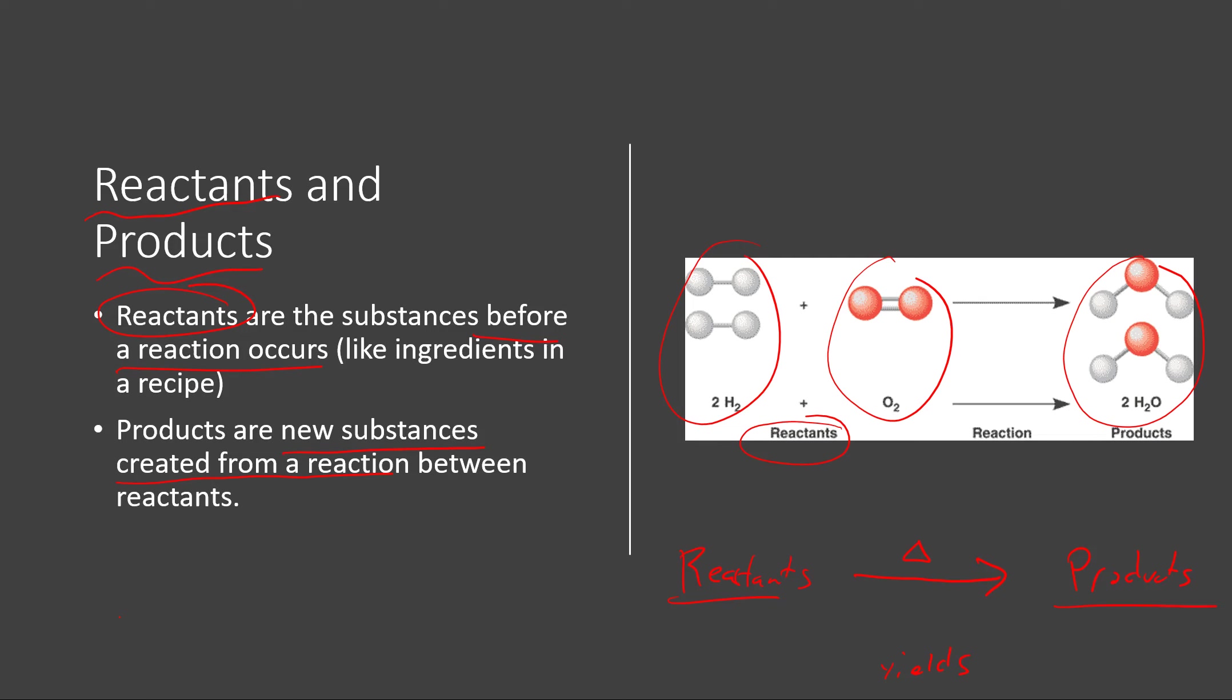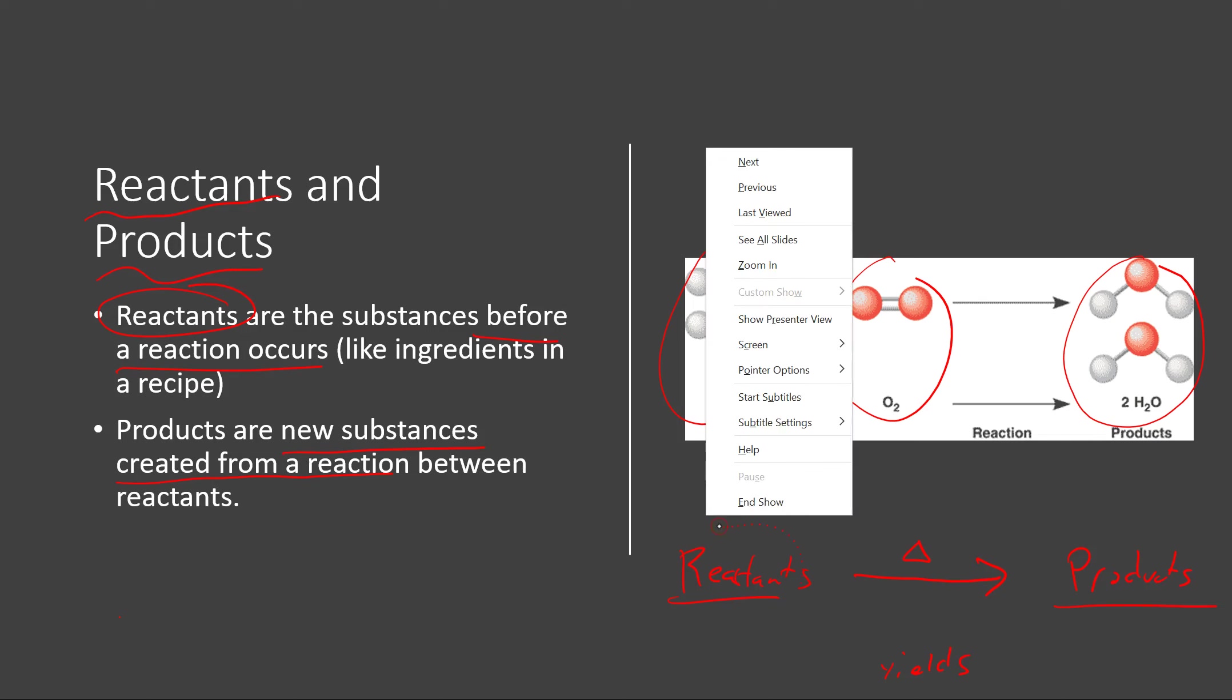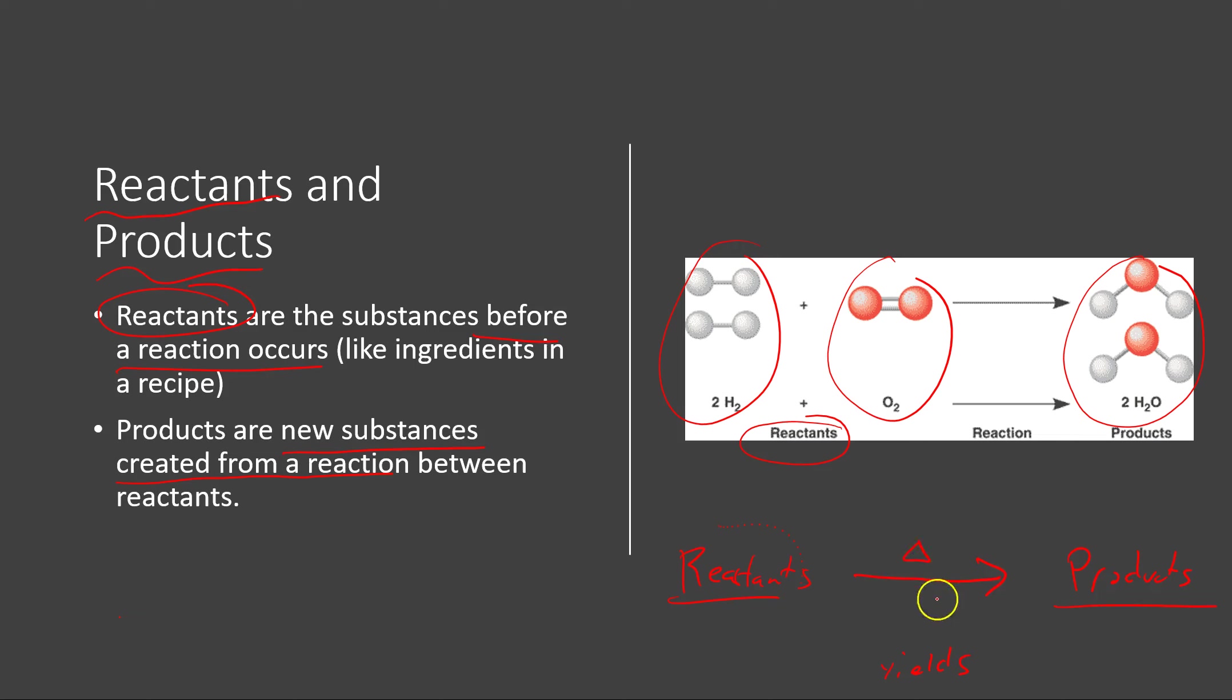Reactants are the form materials are in before the reaction, products are the form the materials take after a reaction. And the arrow just simply means when we have these reactants and they react, they yield those products.